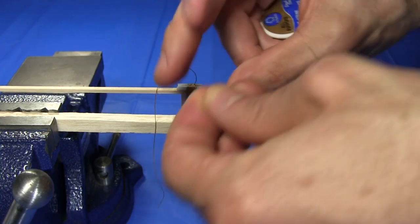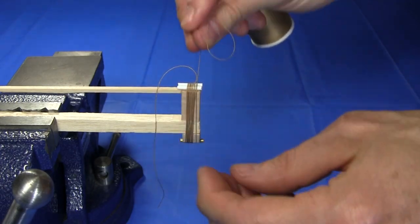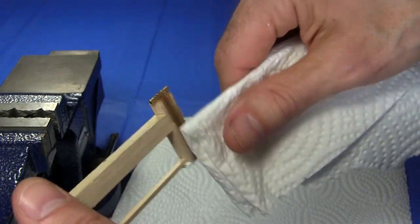To strengthen the front of the fuselage, I wrap it in cotton thread, and then drench it in super glue. I wipe off any excess.